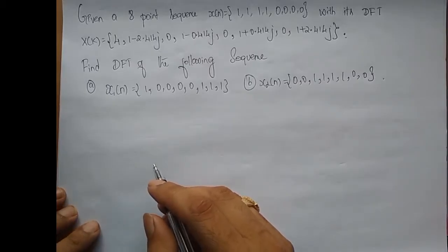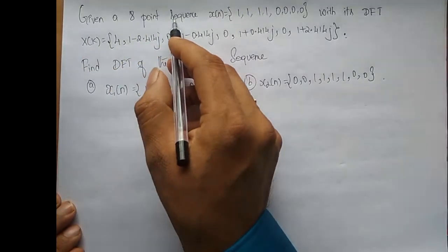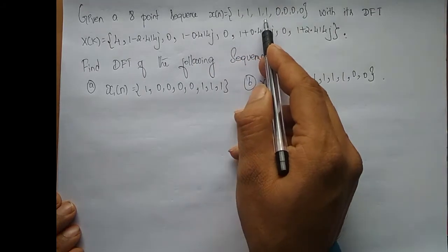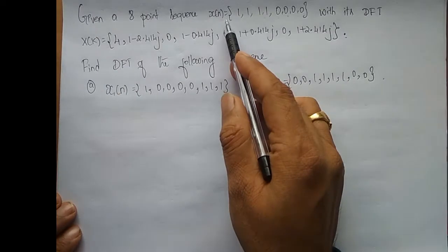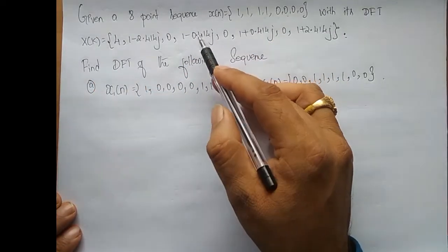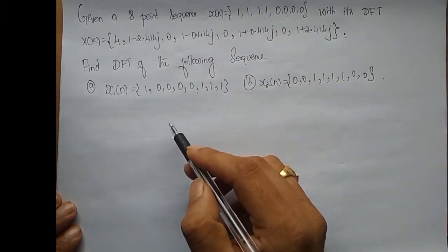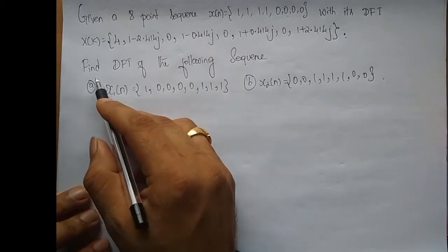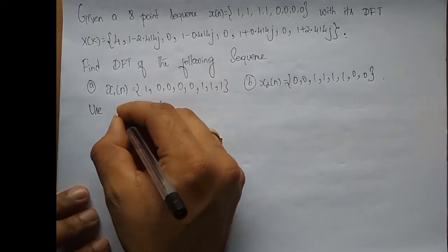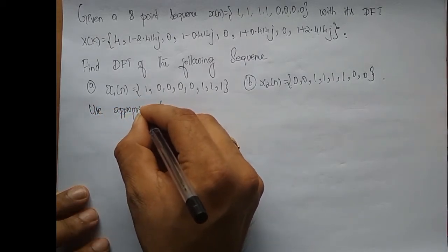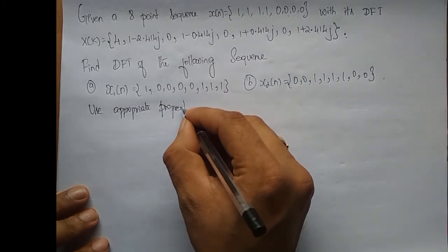Hey guys. I will take up one more problem on finding DFT using properties. Here the problem is: given an 8-point time domain sequence X is 1,1,1,1,0,0,0,0 with its DFT X given. In case if they don't give X, then you have to calculate the 8-point DFT of this sequence and then proceed. So I need to find DFT of these two sequences and use appropriate properties.